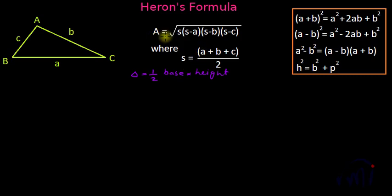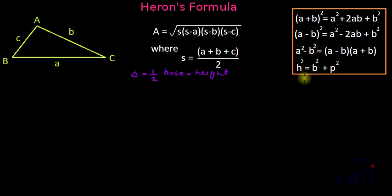Heron's formula is: Area = √(s × (s−a) × (s−b) × (s−c)), where s is half of the perimeter, i.e., s = (a + b + c) / 2. To derive this, we are going to use the Pythagorean theorem — hypotenuse² = base² + perpendicular² — along with a few algebraic identities, all of which we have already learned on MathSmart.